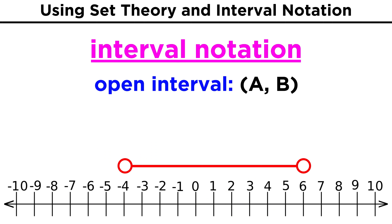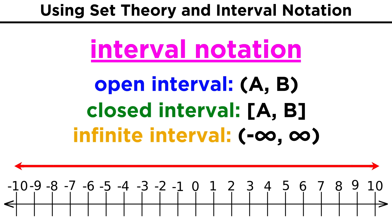These solutions use interval notation. We could have an open interval, which would be the set of all numbers in between A and B. We could have a closed interval, which would be the set of all numbers between A and B, and including A and B themselves. Intervals that include positive or negative infinity are called infinite intervals.